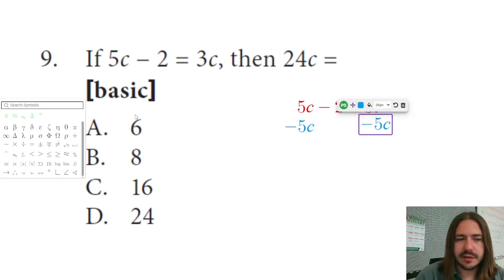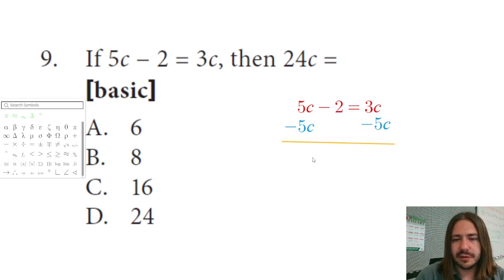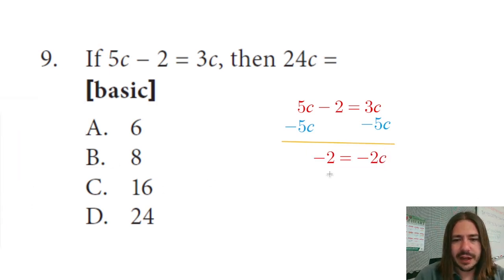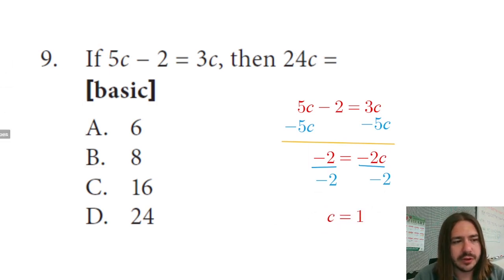So 3C minus 5C is going to be negative 2C. So we get negative 2 equals negative 2C. And if I divide both sides by negative 2, it's C by itself. Negative 2 divided by negative 2 is 1. This tells me that C equals 1. Now this is asking what is 24C? Well, 24 times 1 is just 24. So our answer is D.